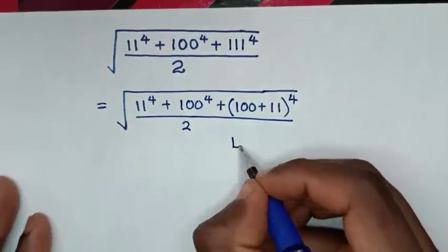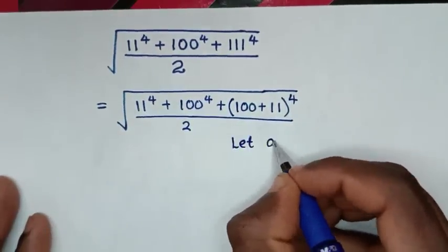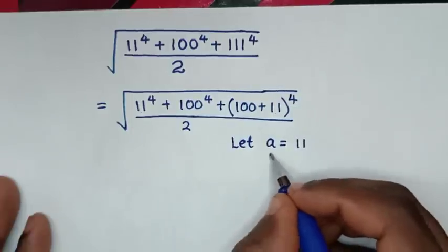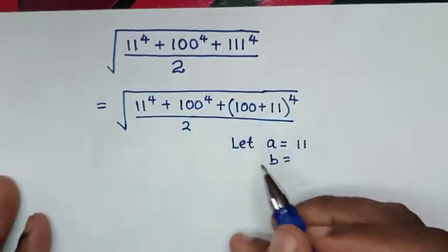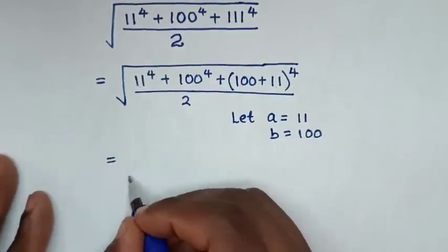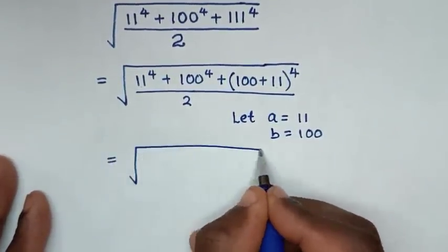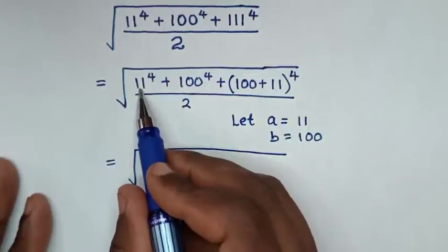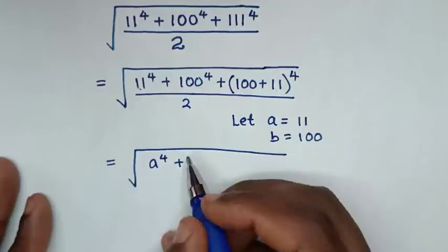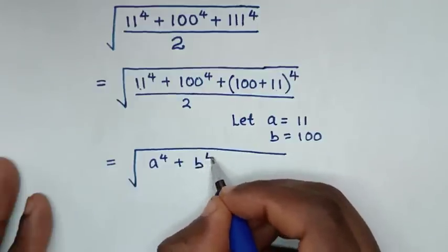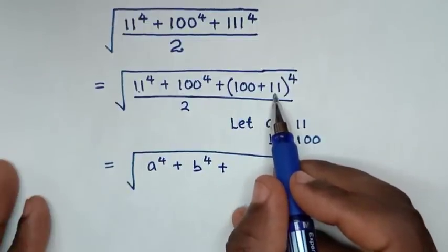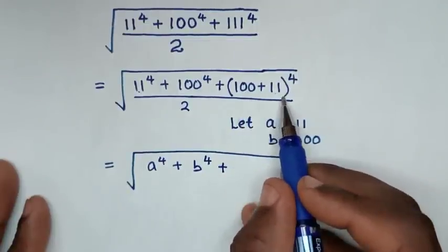In the next step, we let a equal to 11, and we let b equal to 100. So it will be equal to square root of: 11 is a, so it will be a power 4, then plus 100 is b, so it will be b power 4, then plus 100 plus 11 — b plus a — so it will be a plus b, bracket power 4.